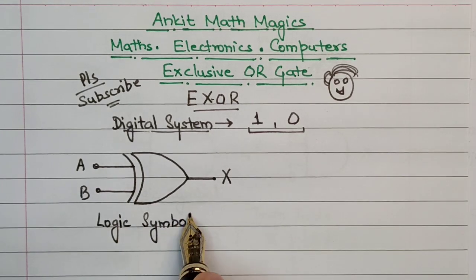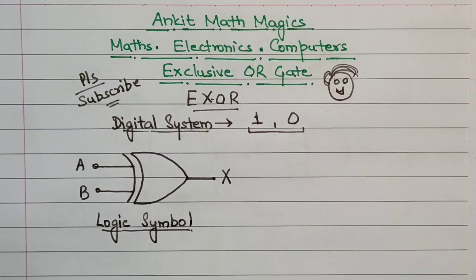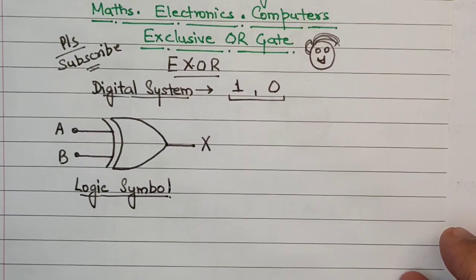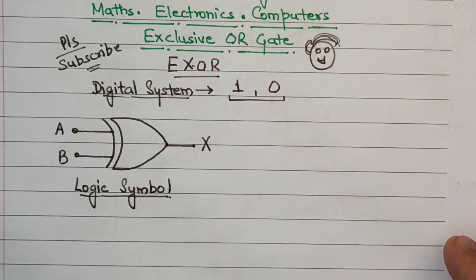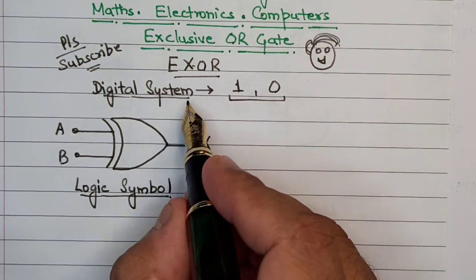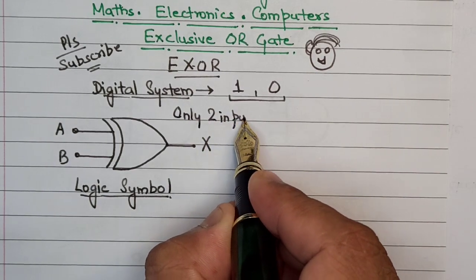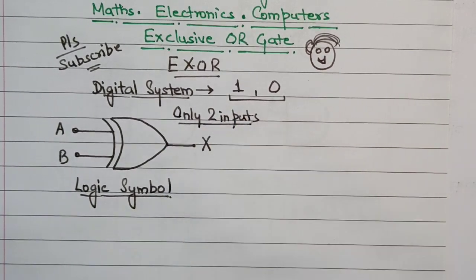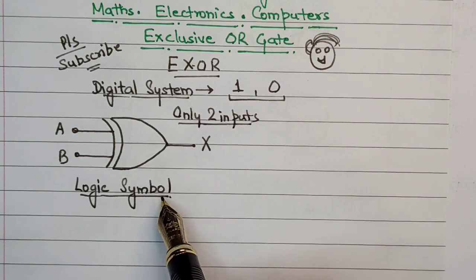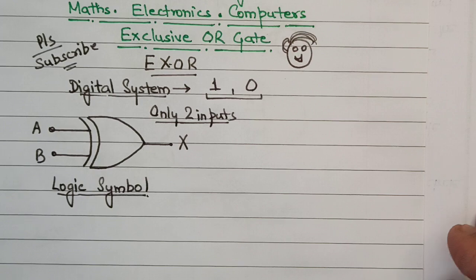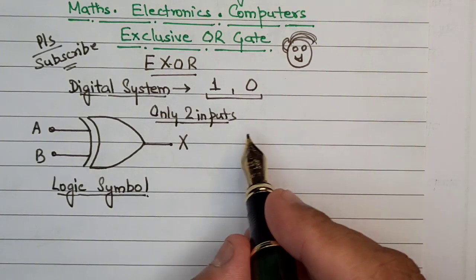But there's a twist to the story right here. As you know, in previous videos you might have learned that there can be multiple inputs to an AND gate and an OR gate, but the Exclusive OR gate can have only two inputs. Yes, that's correct. You have to keep in mind that the XOR gate can have only two inputs, and the truth table for that matter is fairly simple.